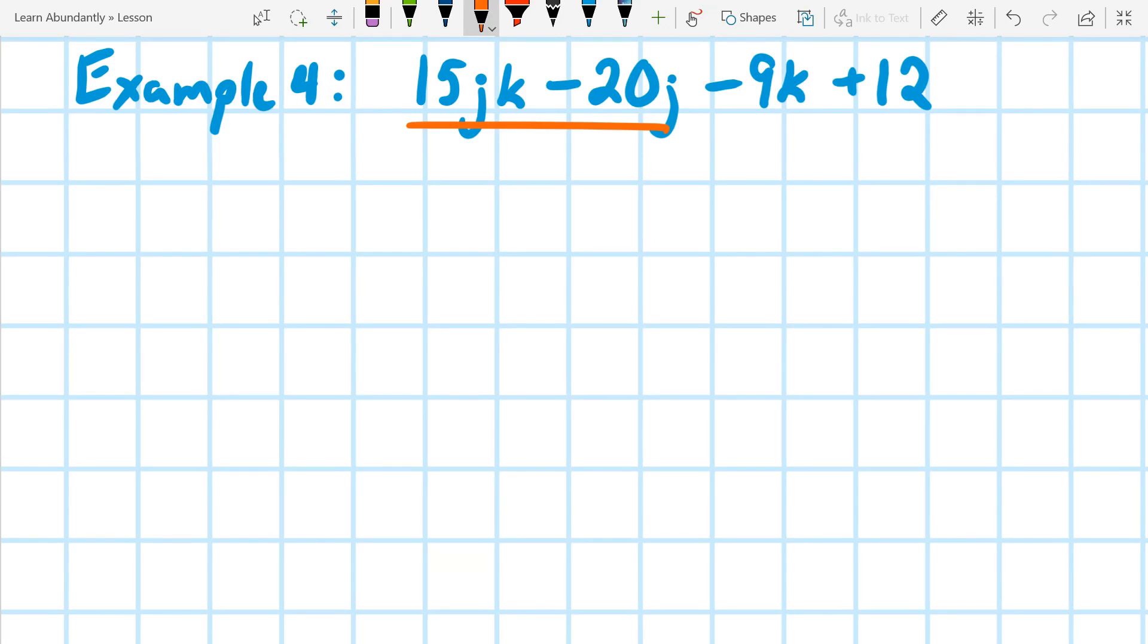So I would take out 5j. Well, that would leave me with 3k minus 4.